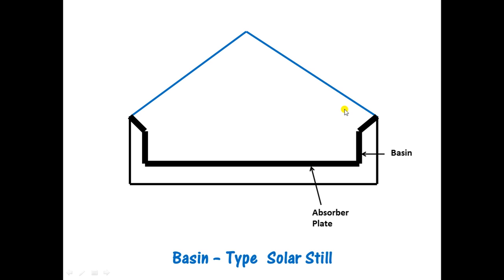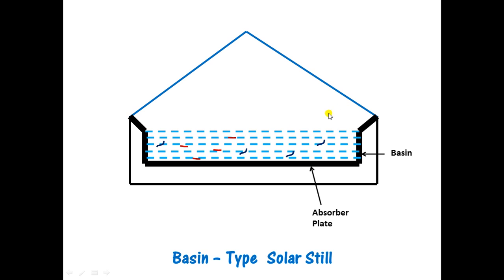The saline water to be purified is filled here, and these are the impurities which you can see. If the saline water is above the level and overflowing, the extra water is taken out using the overflow pipe.